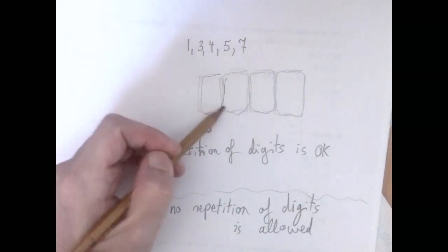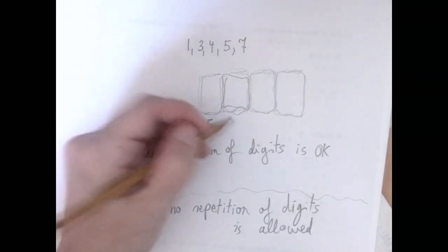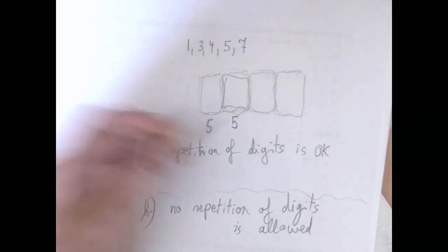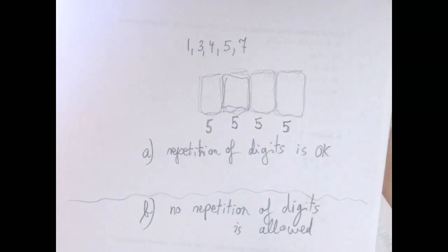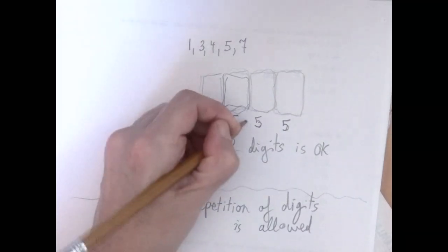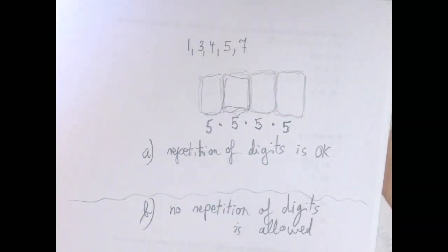When we move on to the second slot, there is no restriction, so we have the same five options. And the same five options for the third one, and the same five options for the fourth one. And these choices are completely independent, which means we can actually multiply these.